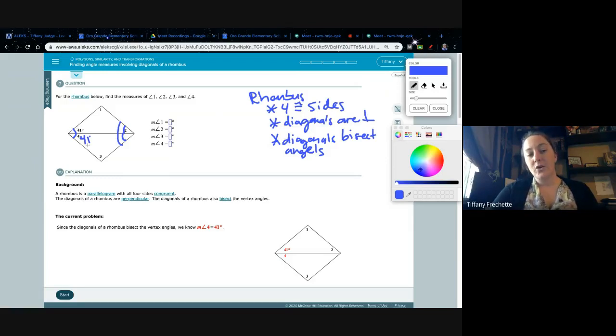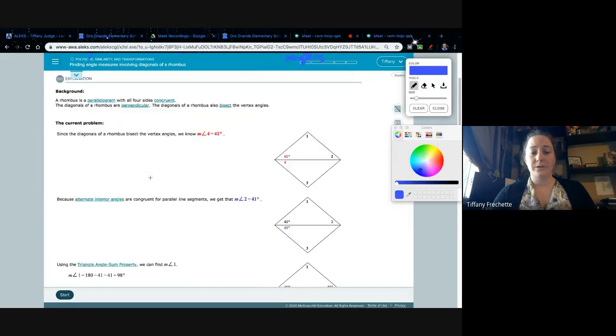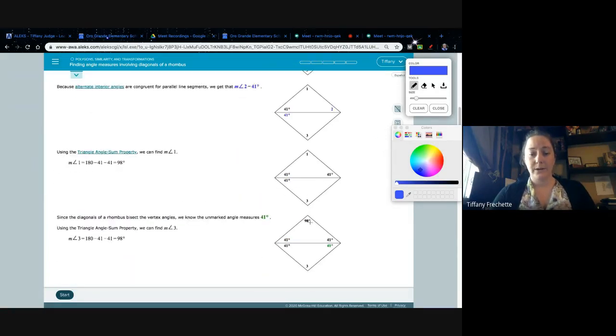So if this whole thing over here is 81, 81, or sorry, 82, because 41 plus 41 is 82, this side is also 82. 82 divided by 2 is 41 again. So angle two also has to be 41. Sorry, I was writing it on the wrong spot.